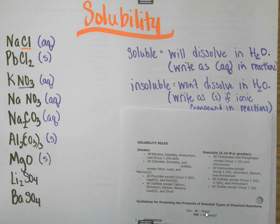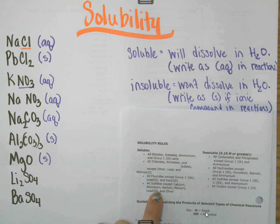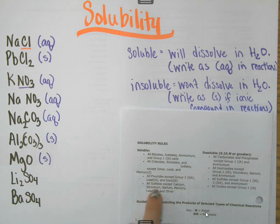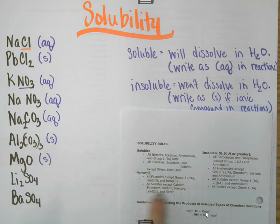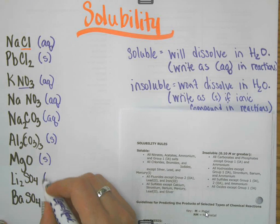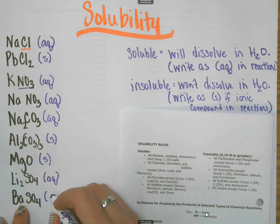Then I have two sulfates: lithium sulfate and barium sulfate. The sulfates are right here. It says that all sulfates are soluble unless they're combined with calcium, strontium, barium — that's one of mine right here — mercury, lead, or silver. Lithium wasn't mentioned, so it will be aqueous, and barium will be a solid.